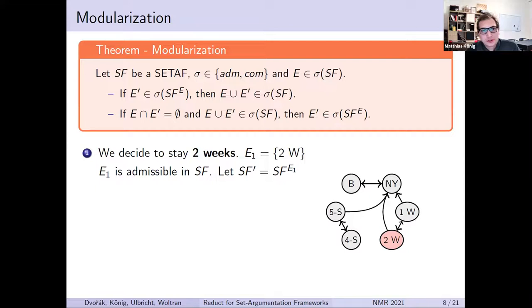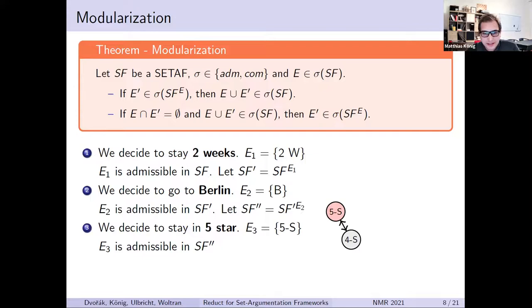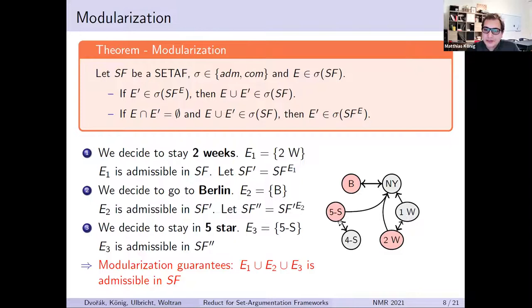What we mean by reasoning on it is captured by the notion of modularization, which allows us to build extensions piece by piece. Say we decide to stay two weeks — only the argument two weeks is already admissible in this framework. If we remove it, we've already seen what happens: we are left with a reduced framework. Say next we decide to go to Berlin, which is also an admissible set there, and the reduct with respect to Berlin is just that set. Then say we decide to stay in a five-star hotel, which is also an admissible argument. Modularization then guarantees that the union of these three sets is also admissible in the original framework.